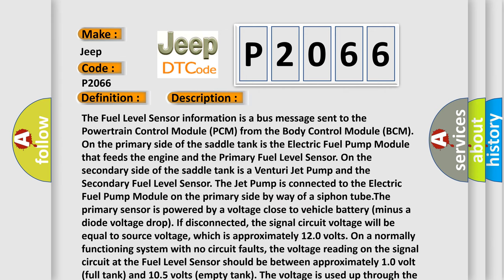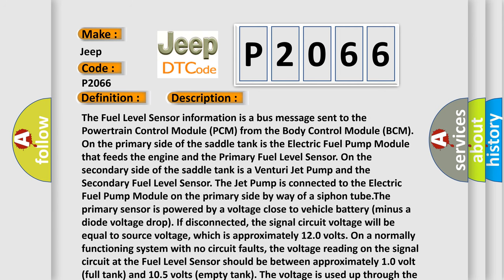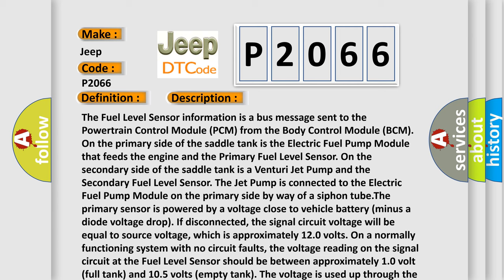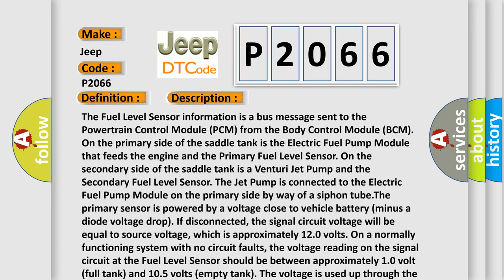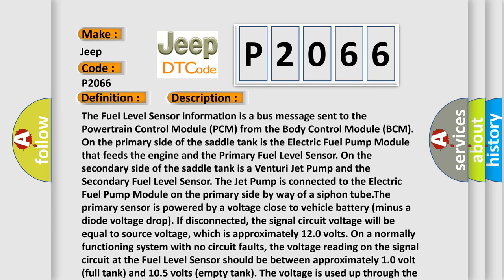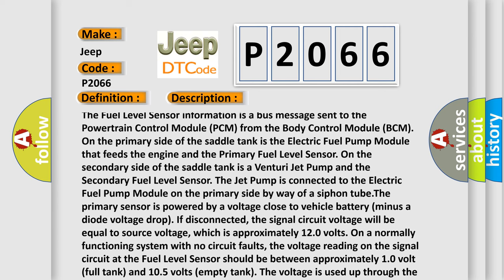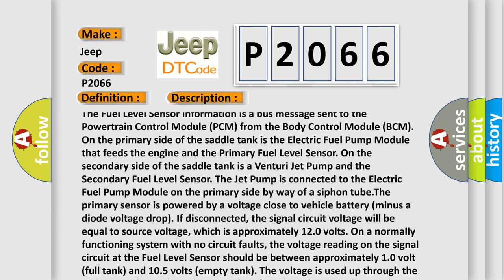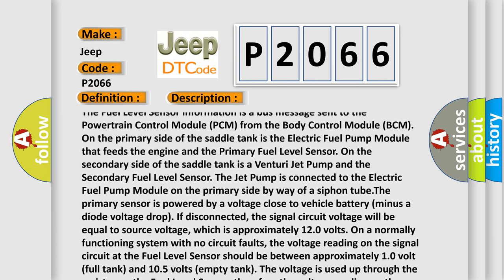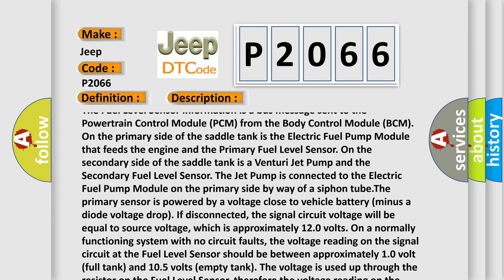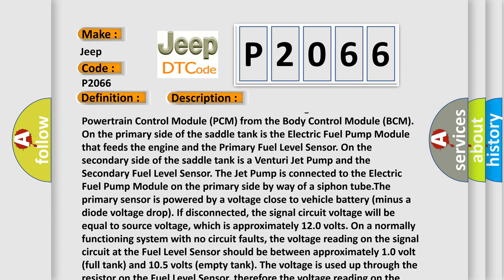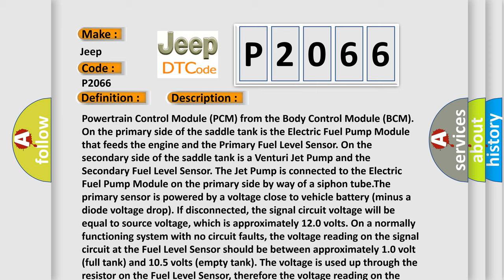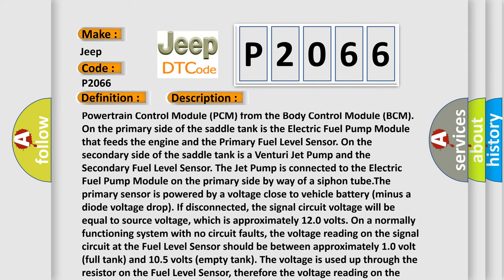The fuel level sensor information is a bus message sent to the powertrain control module PCM from the body control module BCM. On the primary side of the saddle tank is the electric fuel pump module that feeds the engine and the primary fuel level sensor. On the secondary side of the saddle tank is a venturi jet pump and the secondary fuel level sensor. The jet pump is connected to the electric fuel pump module on the primary side by way of a siphon tube.